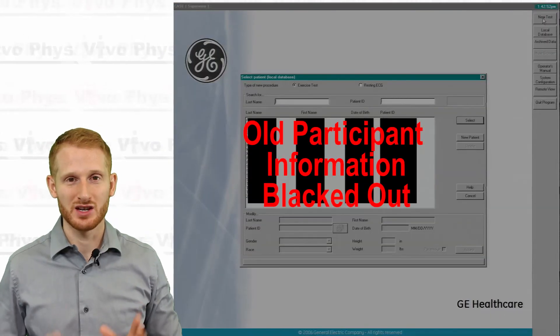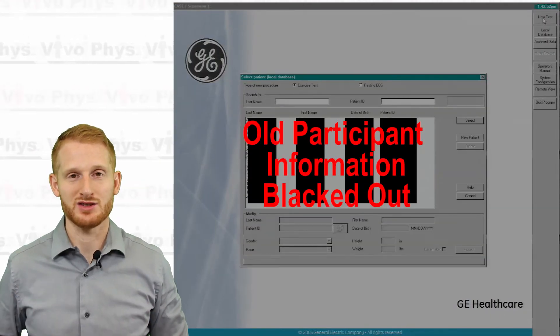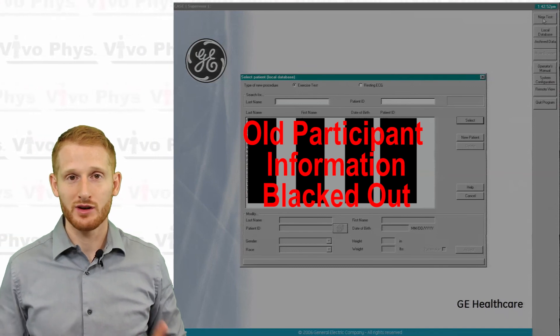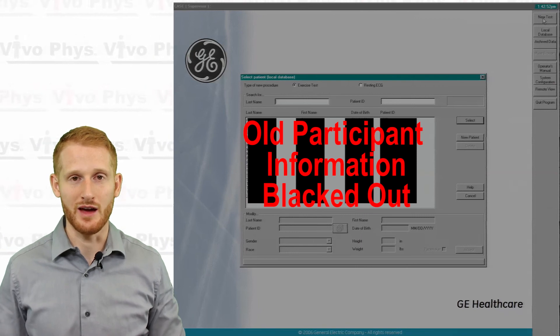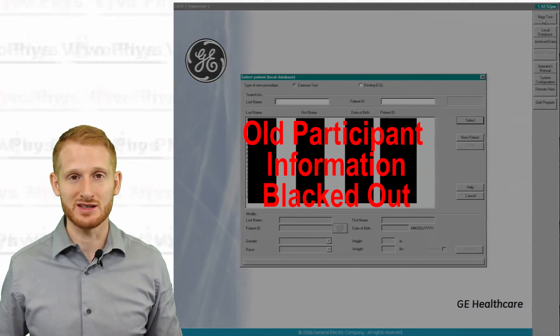Simply click on new test. It's going to bring up a pop-up window asking you who the participant is. If they're already in your system, you can just search for them and open them up, so just double click on them, and that will sort of go into the testing mode.